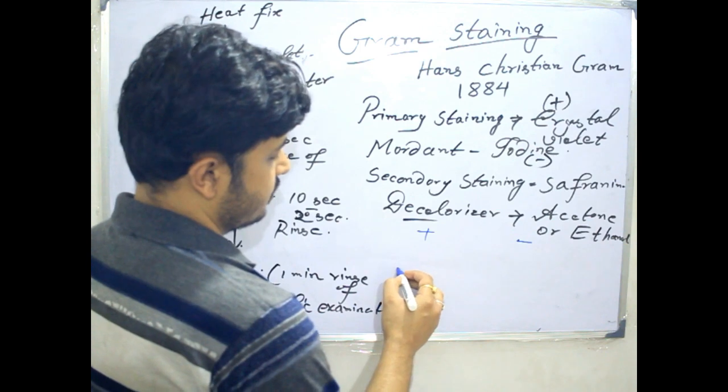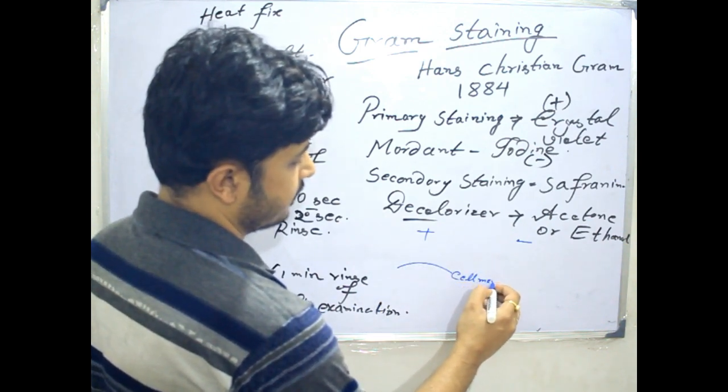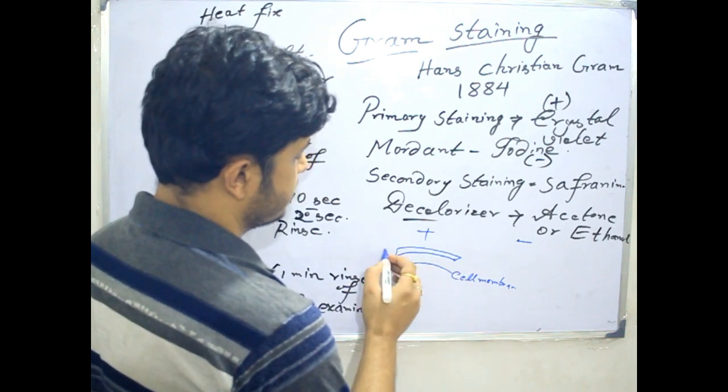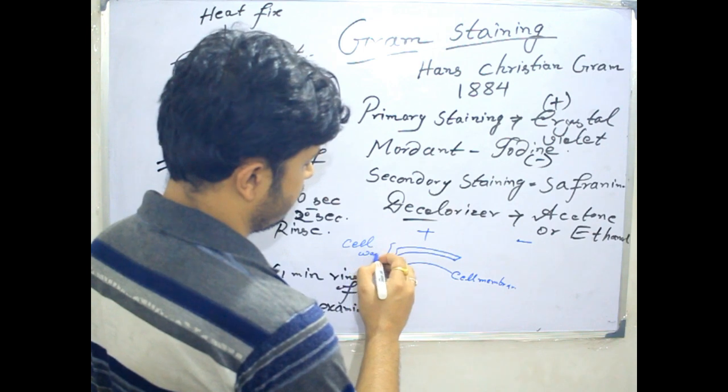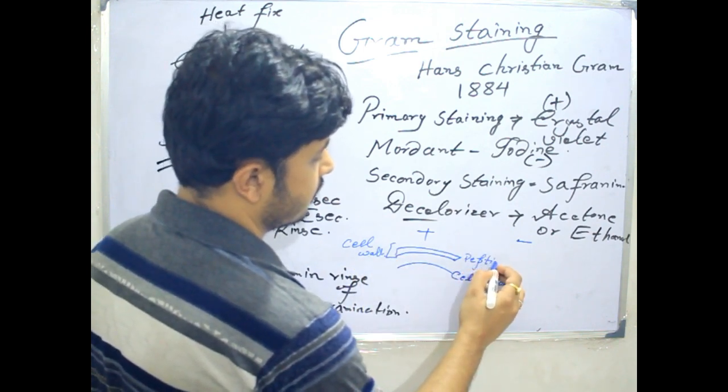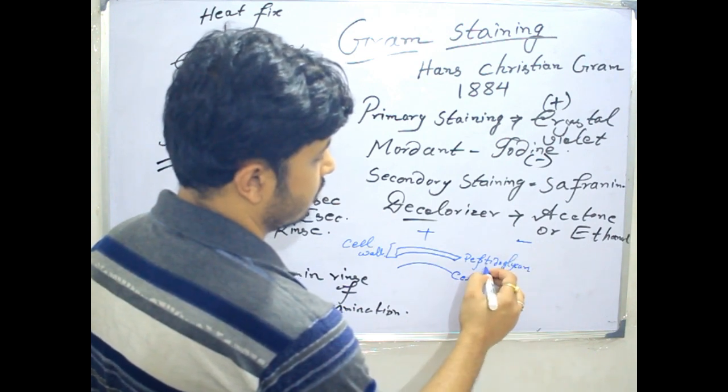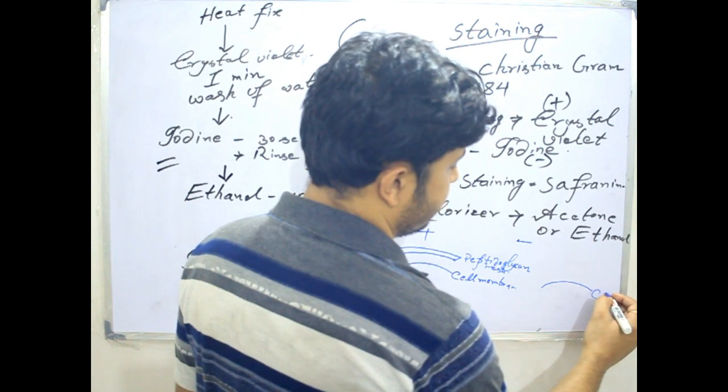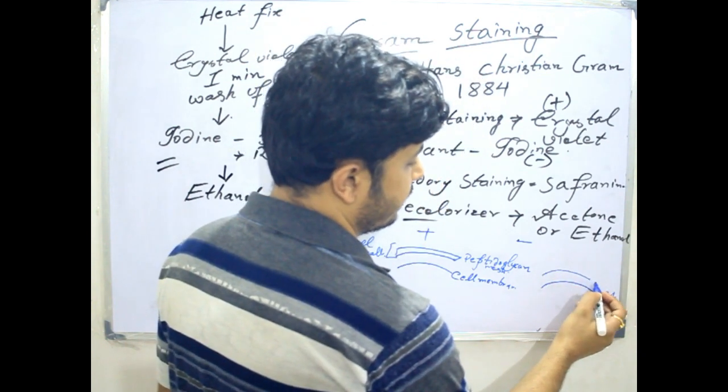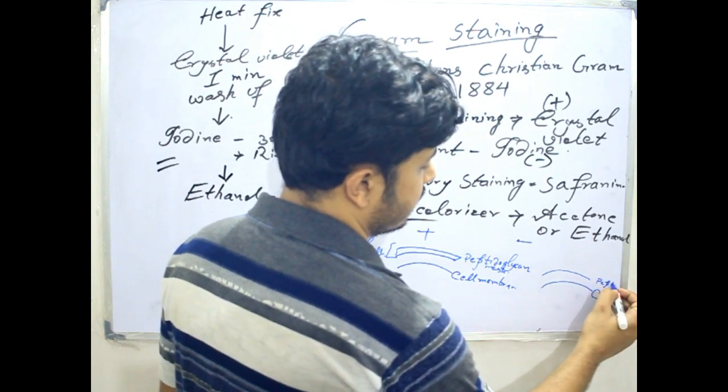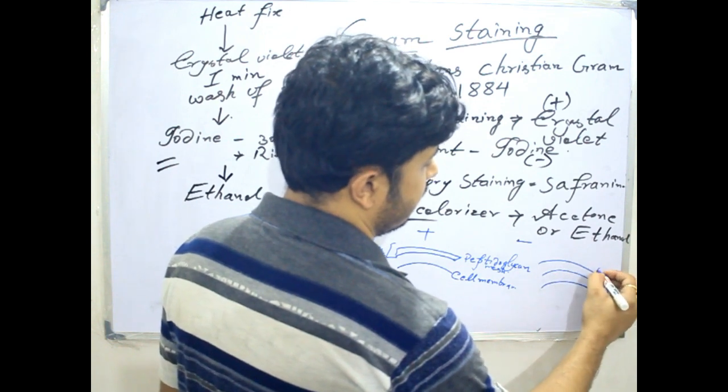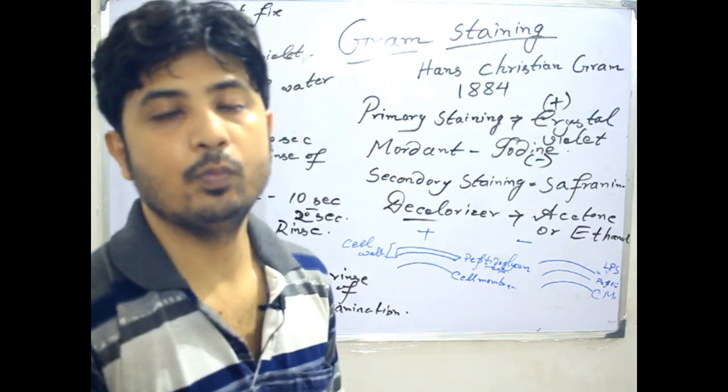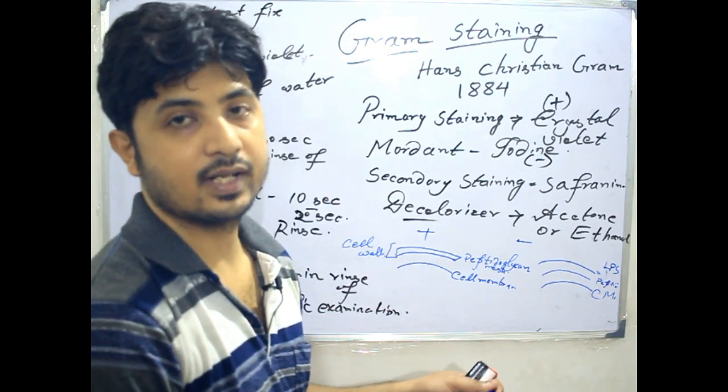Let's look at the structure. Suppose this is the cell membrane. In case of gram-positive, there is a thick peptidoglycan cell wall. This is the structure of gram-positive cells. Now in case of gram-negative, this is cell membrane and a thin layer of peptidoglycan.